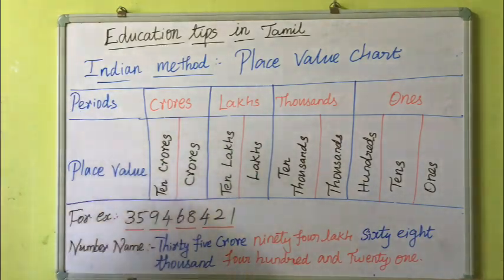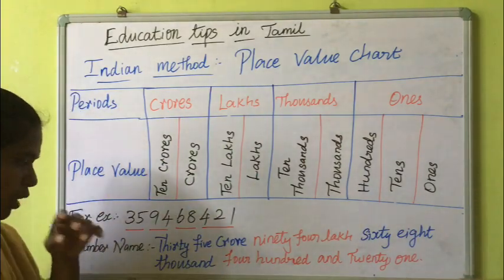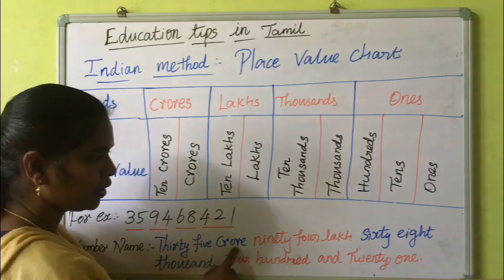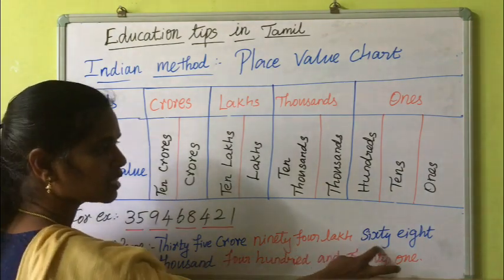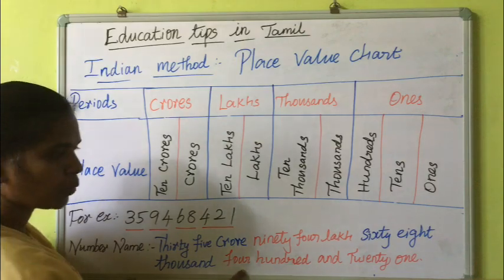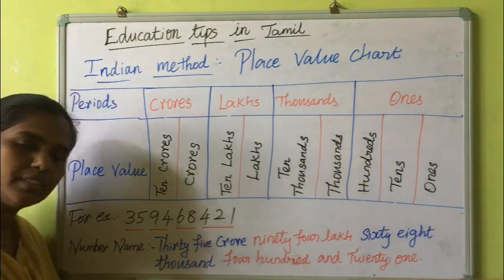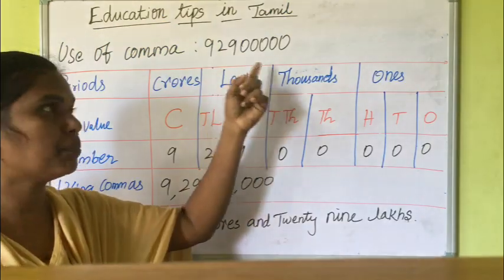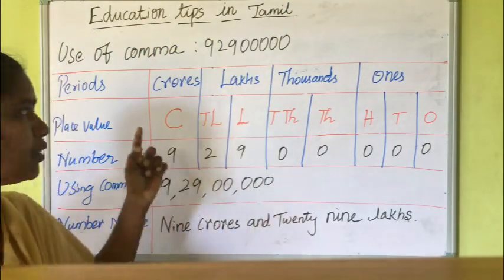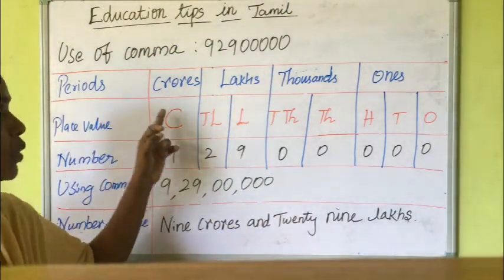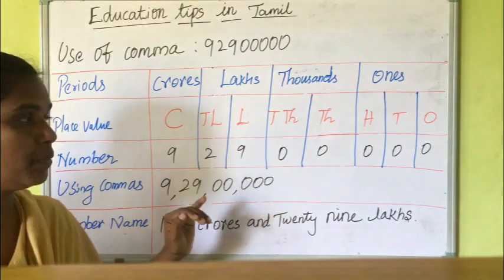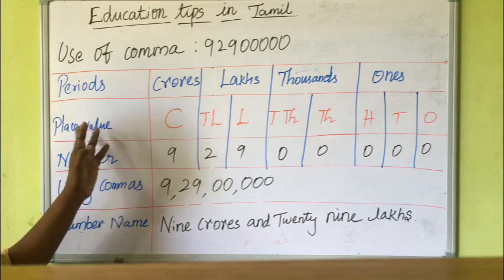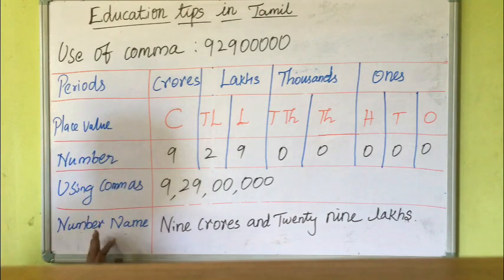That's awesome. So the number name is: thirty-five crores, ninety-four lakhs, sixty-eight thousand four hundred and twenty-one. Now let's look at another example. Given another large number — now apply this chart. The periods are: crores, lakhs, thousands, and ones. Using commas to write the number name.